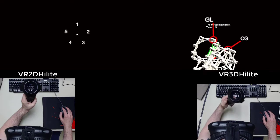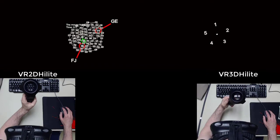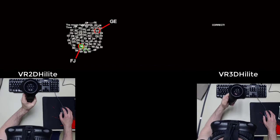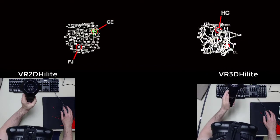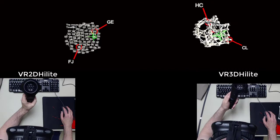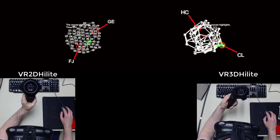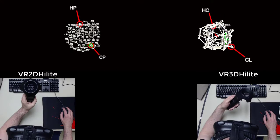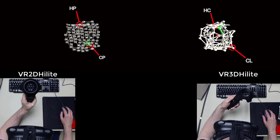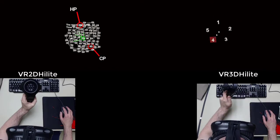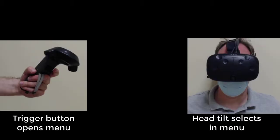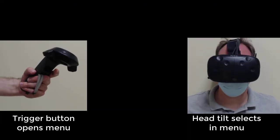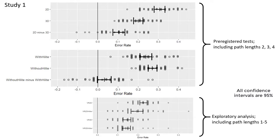We pre-registered our predictions and recruited 34 participants. In each trial, the system indicated two end nodes, and the user had to find the length of the shortest path between these nodes. The path length varied from one to five edges, and the user gave their answer through a radial menu that was popped up with their non-dominant hand. Our first study found that 3D resulted in a significantly lower error rate than 2D.